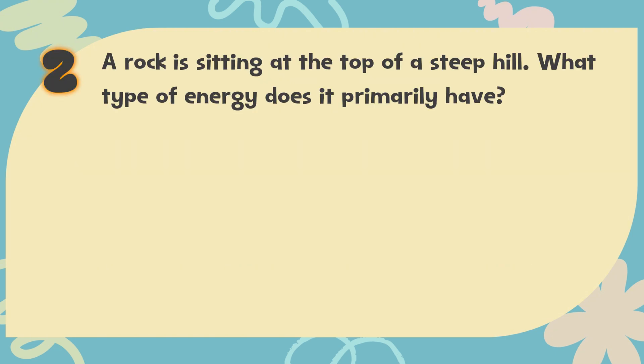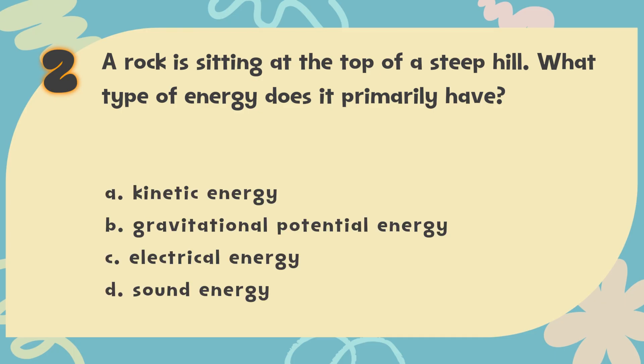Number 2. A rock is sitting at the top of a steep hill. What type of energy does it primarily have? The choices are: A. Kinetic energy, B. Gravitational potential energy, C. Electrical energy, D. Sound energy.